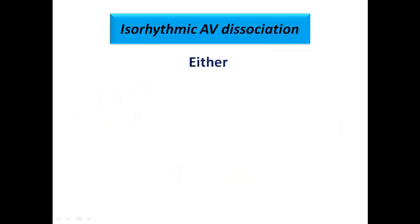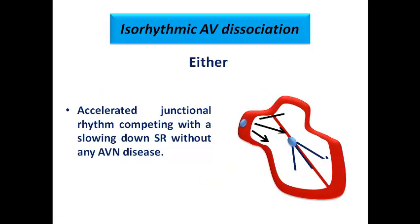So where is the problem? One theory is that an accelerated junctional rhythm competes with a slowing sinus rhythm — for example, the sinus rhythm slows due to sinus bradycardia or sinus arrhythmia, which may occur normally in athletes, while the junctional rhythm is accelerated at a rate of about 50–60 bpm. The SA node slows down, leading to the same rate for both, so the atrium is paced by the SA node while the ventricle is paced by the junctional rhythm. There is no AV conduction because the ventricle is paced by a separate rhythm.